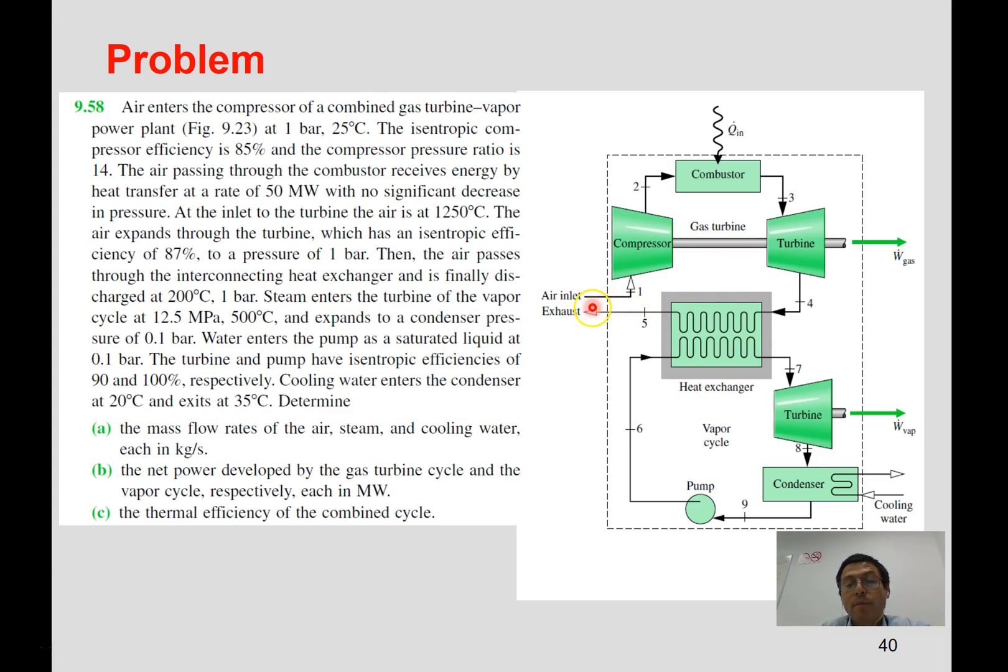The air expands in the turbine until it gets to 100 kilopascals pressure. It has an isentropic efficiency of 87 percent. The compressor has 85 percent. This air will cool down in a heat exchanger and it cools down to 200 degrees. That heat will be used in this vapor cycle in which we have evaporating water until it gets to 12.5 megapascals and 500 degrees Celsius.